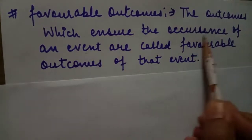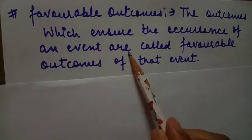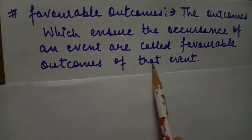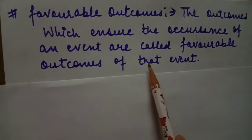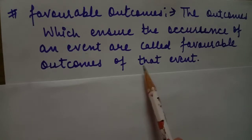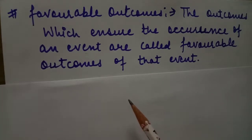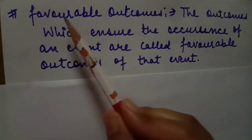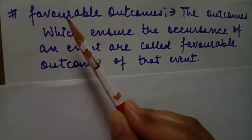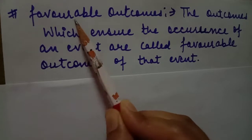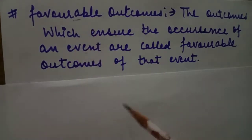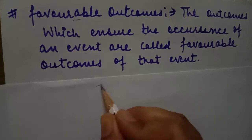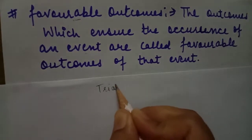Favorable outcomes are those outcomes which ensure the occurrence of an event. After performing an experiment we get many possible outcomes, but favorable outcomes are those whose occurrence satisfies the given condition.